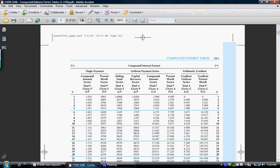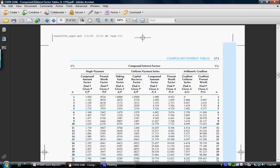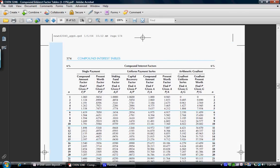Go to our compound interest factor tables, scroll through until we get to the 6% interest rate, find the factor that we're concerned with. In this problem, we need to know the compound amount factor, when we need to find F given P, scroll down to the number 3, because we have three interest periods, and we're going to use 1.191.